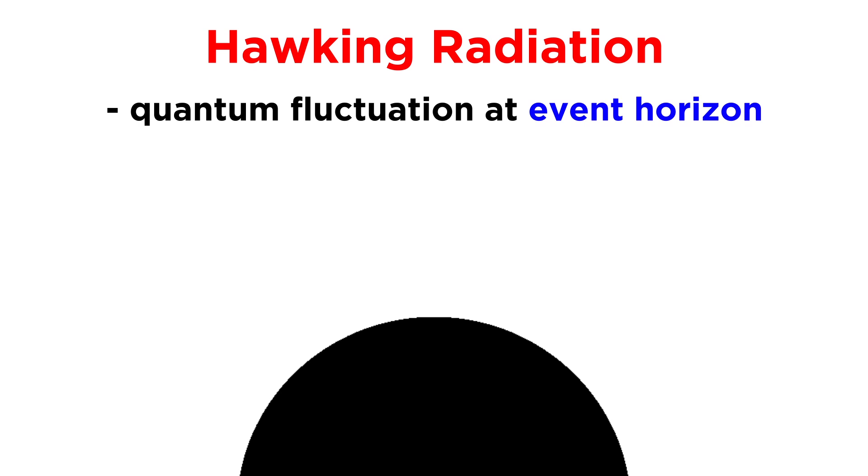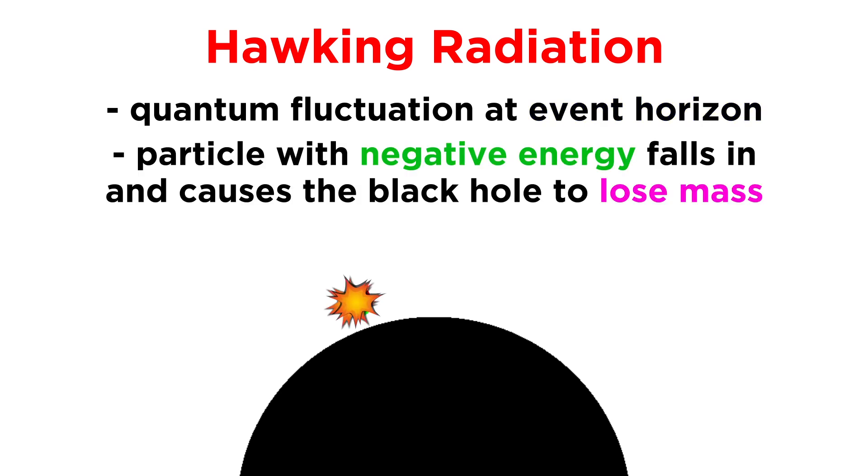One possible explanation claims that when such a quantum fluctuation occurs right at the event horizon of a black hole, one of these particles will fall into the black hole, while the other escapes.